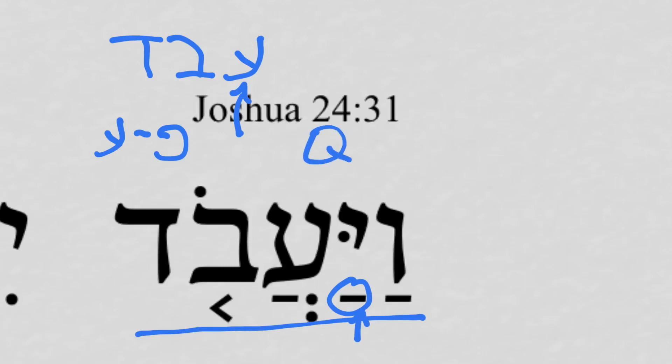That is, the pathach is merely there for the ayin. So this is: ayin, qal, vav-consecutive, imperfect, 3rd masculine singular. And the subject, Israel, is spelled out.